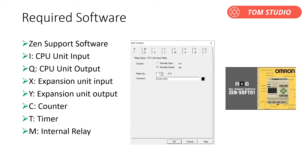In programming, normally: I means physical CPU unit input, Q means physical CPU output, X means expansion IO unit input, Y means expansion IO unit output, C means counter, T means timer, M means internal bit. Both timer and counter instructions are output type, which means you must set a condition in front of the counter or timer, then use their contact to control outputs.